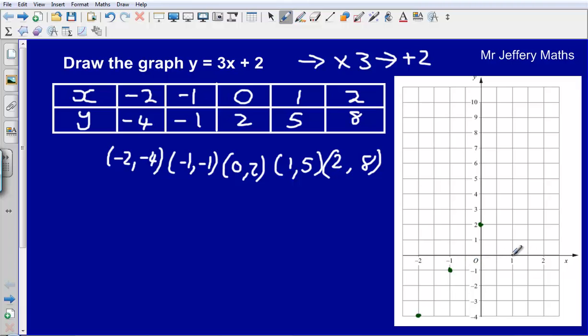Next one, go along the corridor to where 1 is, then I am going up to 5. That gives me my fourth coordinate. And then the last one, go along the corridor to 2 and up the stairs to 8. And this gives me the points that I need to plot.